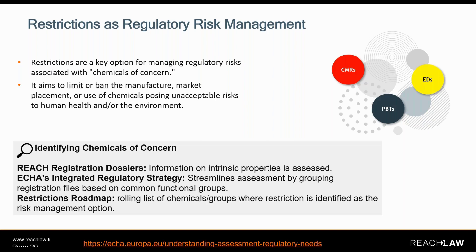Under current REACH, chemicals of concern are defined as chemicals that are carcinogenic, mutagenic, or reprotoxic (categories 1A or 1B), or persistent, bioaccumulative and toxic, or have properties of equivalent concern. The aim of a restriction is to limit or ban the manufacture, market placement, or use of chemicals causing unacceptable risks to human health and/or the environment. These chemicals of concern are generally identified from the assessment of information on their intrinsic properties as reported in the respective REACH registration dossiers.